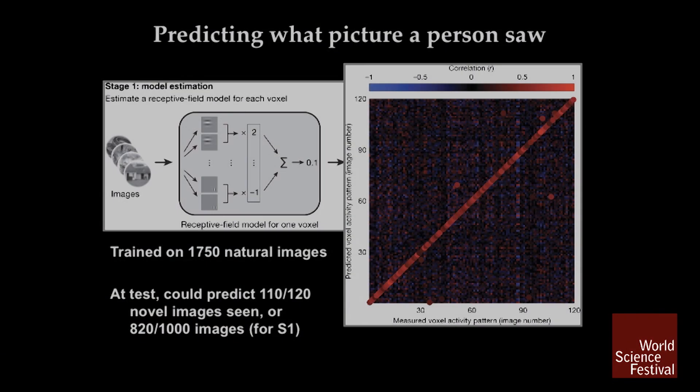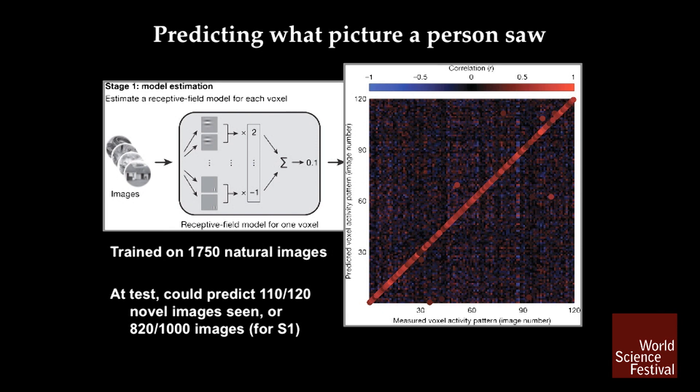Other groups have pushed this technique further, making use of the fact that different global patterns on the retina lead to different activations in the visual cortex. Essentially every little spot in your visual cortex responds to a different part of the visual field. If you present a thousand or two thousand different pictures — say, random pictures selected from Google — each creates a unique pattern of activity in your brain. This group showed that based on these activation patterns, they could predict novel pictures the person saw: they showed 120 different pictures and correctly predicted which picture the subject was seeing 110 times, with really high accuracy. What you see in the scatter plot is a sharp line along the diagonal, showing their ability to predict the correct image.